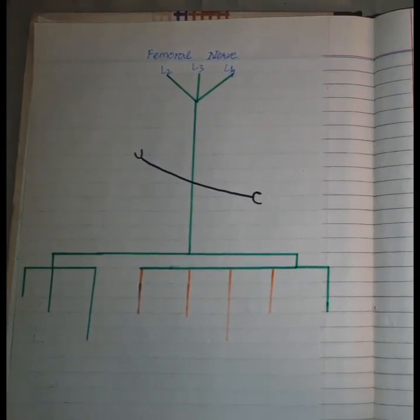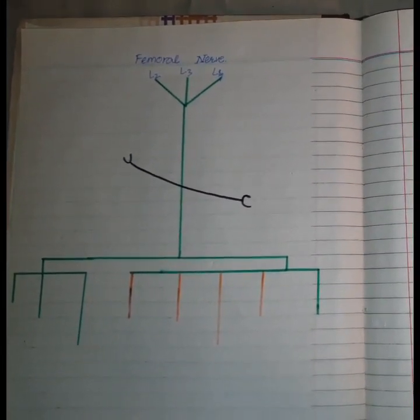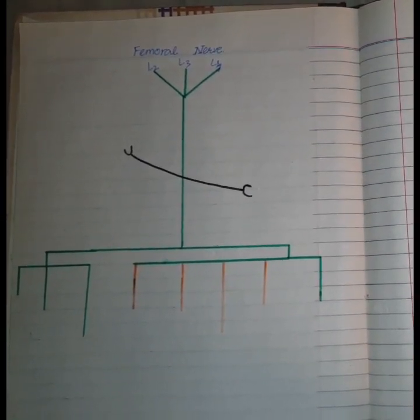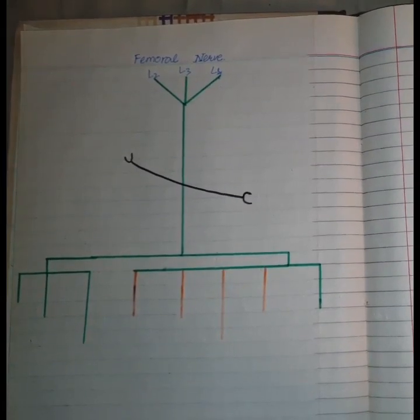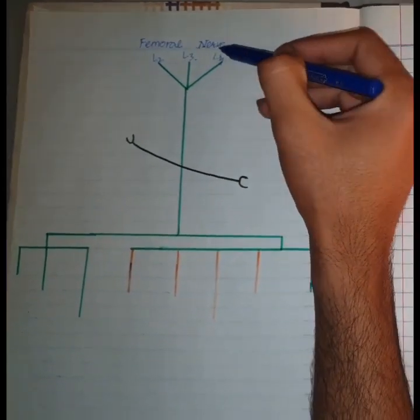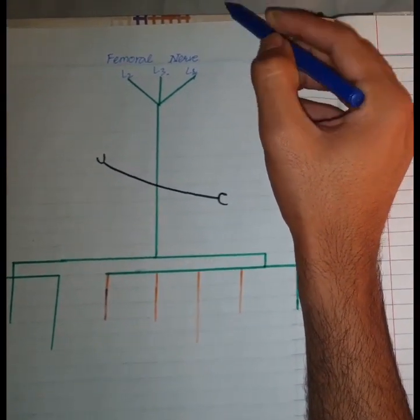So what is the root value of the femoral nerve? The femoral nerve is formed by the dorsal division of the anterior primary rami of lumbar plexus L2, L3, and L4. Remember, it is the largest branch of the lumbar plexus.